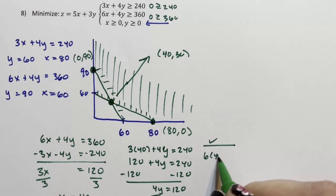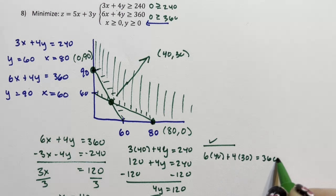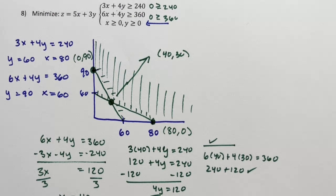Is 6 times 40 plus 4 times 30 really equal to 360? So 240 plus 120. Yes. Okay. So I now have three points.